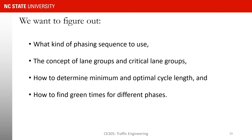So far in this course we have talked about many definitions and concepts pertaining to signal timing and signalized intersections. In the rest of this chapter, we will find out what kind of phasing sequence to use, revisit lane groups, learn about critical lane groups, determine minimum and optimal cycle length, and find green times for different phases. Once we learn all of these, we will determine delay for each lane group, each approach, and the intersection overall, and find the level of service.